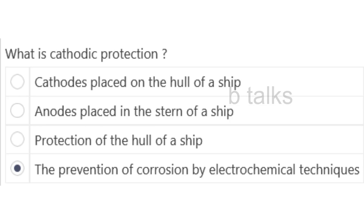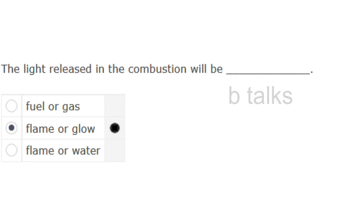What is cathodic protection? Options: Cathodes placed on the hull of a ship; Anodes placed in the stern of a ship; Protection of the hull of a ship; The prevention of corrosion by electrochemical techniques. Answer: The prevention of corrosion by electrochemical techniques.